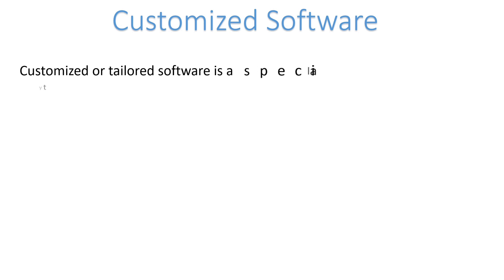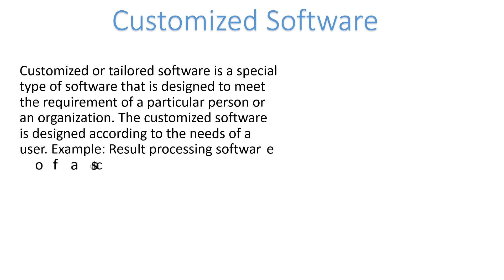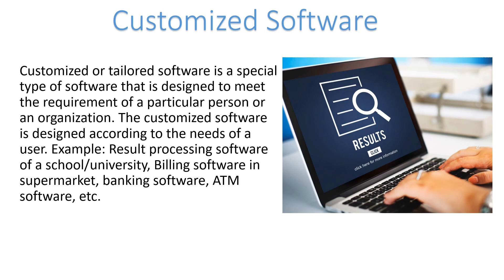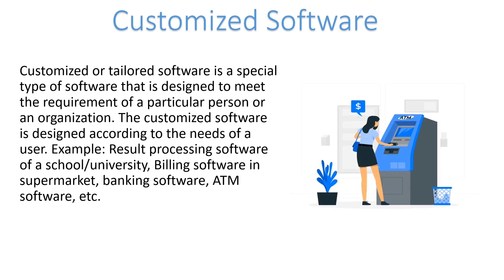Customized software, also known as tailored software, is a special type of application software designed to meet the requirements of a single organization or person. It performs a single task but is used by a particular person or organization and cannot be used by the general public for common tasks. Examples include result processing software in schools or colleges, billing software for supermarkets, banking software, and ATM software.